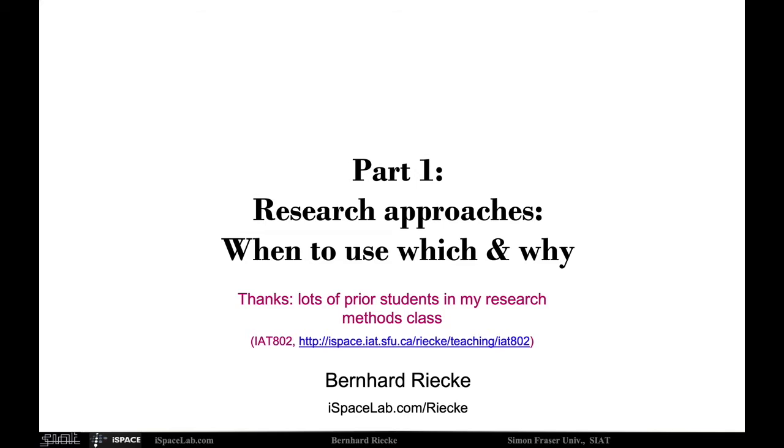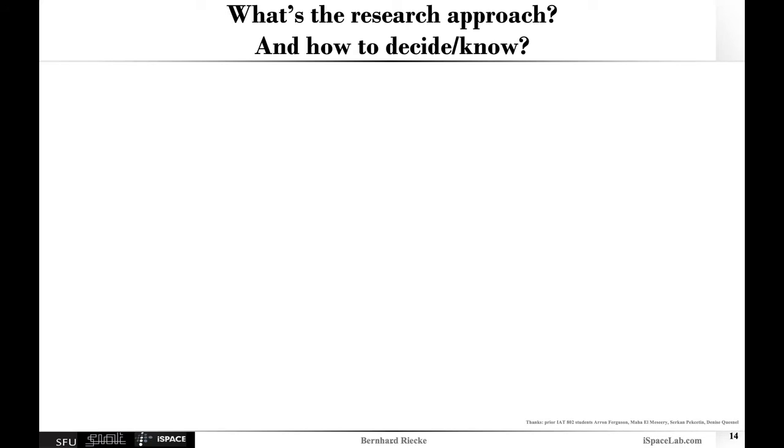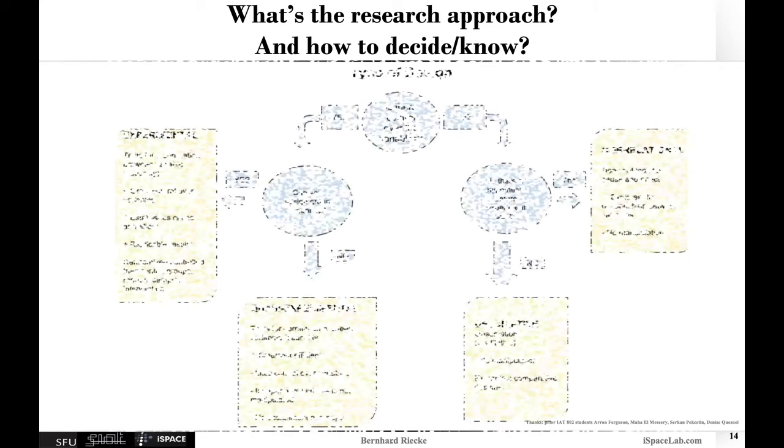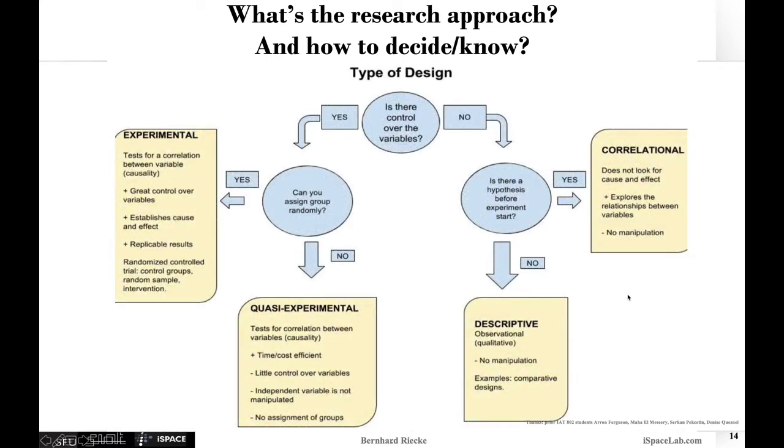I'd like to start with an overview of how to actually decide what research approach to use or what research approach an existing study actually uses, going through a decision table. The first question you can ask is, is there actual control over the variables? Was there anything manipulated? If not, then you're in the range of non-experimental research.